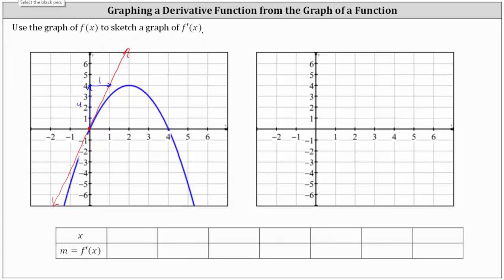So below, when x is equal to zero, the slope of the tangent line is equal to four. The point zero comma four is one point on the graph of f prime of x.